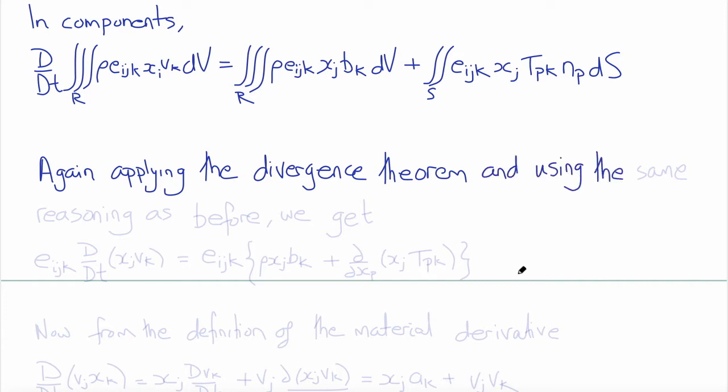And using the same reasoning as before, so that the integrand itself must be satisfied, we obtain the permutation symbol EIJK times the material derivative, DDT of XJ times VK